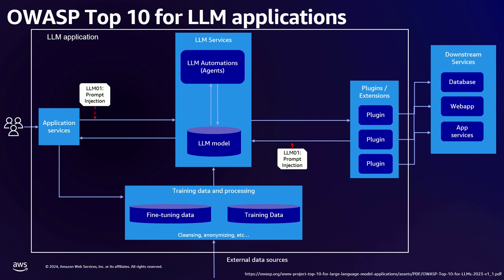We'll start with what these look like in this notional diagram. In LLM01, you have prompts that have been artificially created that will create issues with the LLM application — something that will cause it to do something it shouldn't. With LLM02, anything that the LLM creates may be interpreted by downstream applications. If those downstream applications don't do sanitization of that input, that can also create issues for those further downstream applications.